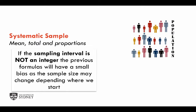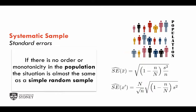If the population is large, the bias is going to be negligible. So the estimators for the mean, sum, and proportion that we've used for simple random sampling can also be applied to the systematic sample, and these estimators are going to be unbiased or will have a very small bias. But in the case of the standard errors, the usual estimators will only be unbiased if there is no order or no monotonicity in the population. In those cases, the estimators will be valid as standard errors.